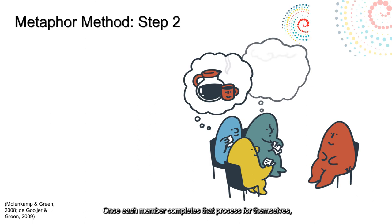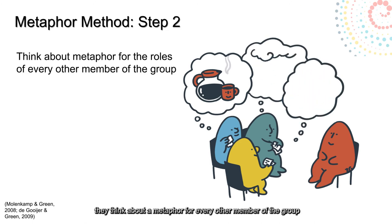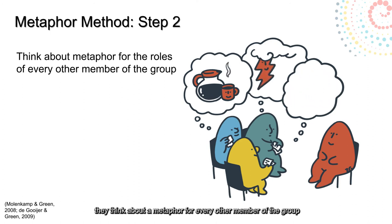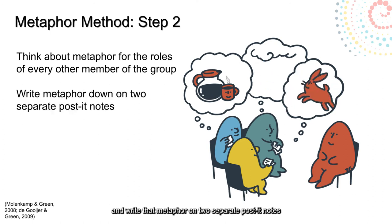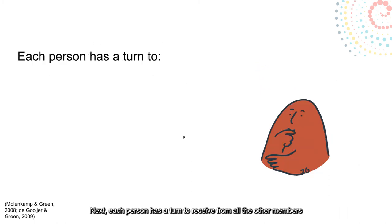In the second step, once each member completes that process for themselves, they think about a metaphor for every other member of the group and write that metaphor on two separate post-it notes, one of which will be kept and the other will be distributed to the particular member.